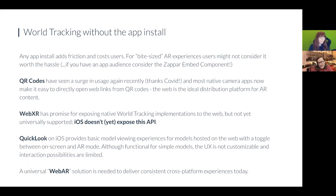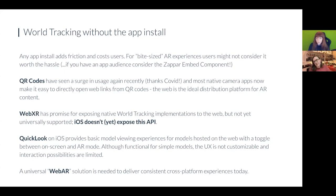What we're really here about is how we can do world tracking without requiring an app install. App installs add friction to the user experience and for small bite-sized experiences, users might not feel it's worth an install for a one-time experience. Thanks to COVID, QR codes are a thing again — most native camera apps have integrated scanning of QR codes and URLs, making it easy to get users to a website. If you have a display ad, physical print, or physical objects, you can easily get a QR code there and get users to your experience.